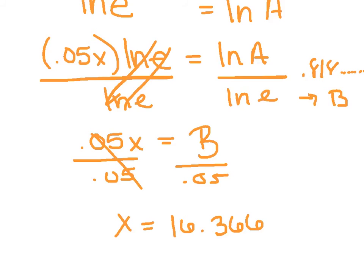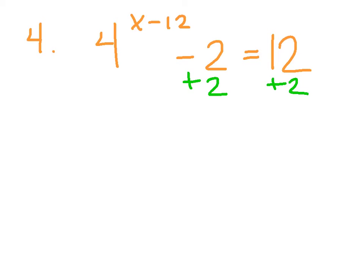Number four: 4 to the x minus 12 minus 2 equals 12. So running through my steps, are the base and exponent, this exponential, isolated? Hopefully you're saying no. There's a 2 on this side. So I've got to kick him out. I'm not going to divide by 2 because it says minus 2. So add 2 to both sides first.